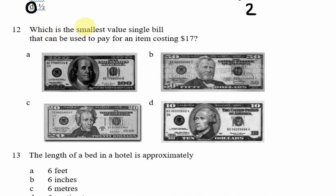Question 12: What is the smallest value single bill that can be used to pay for an item costing $17? Of course it would be the $20 bill. This is a straightforward question — the Stage 1 paper doesn't really require a lot of working out, more like common reasoning.